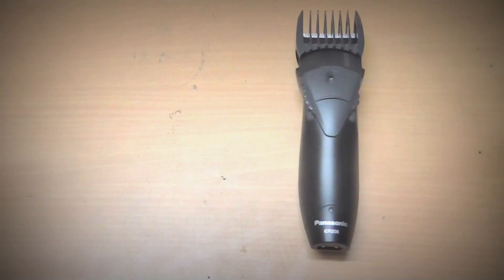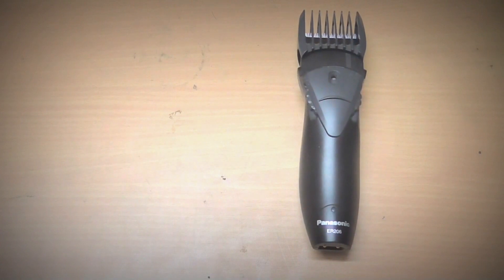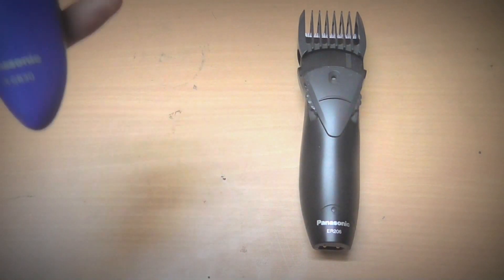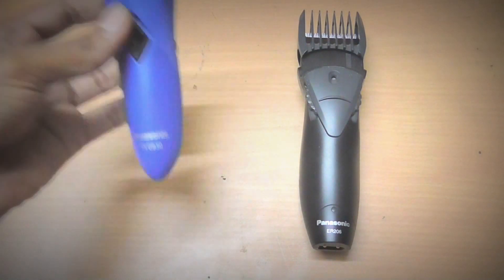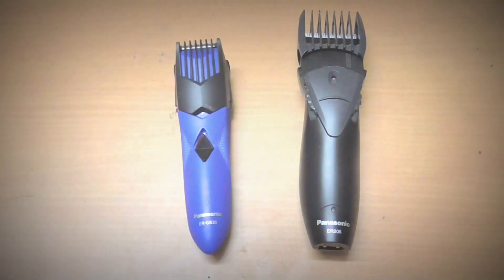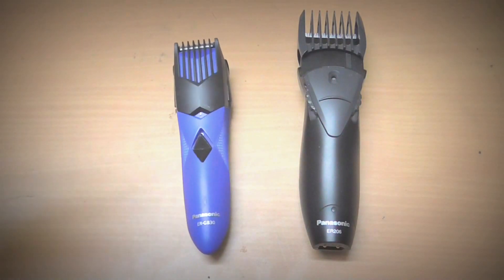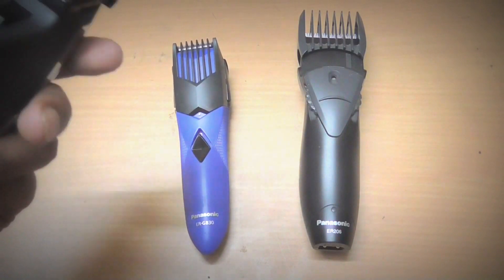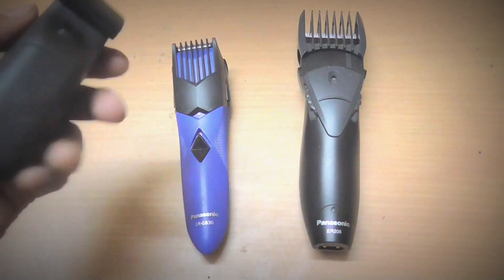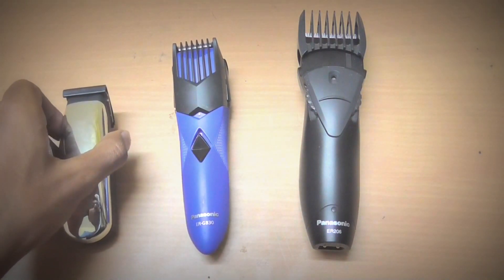The first one is Panasonic ER206. The second one we have is also from Panasonic and the model number is Panasonic ERGB30. And last but not the least, we have an economical trimmer that I have been using from a long time, and the model number is 9966 from company name Wahl.